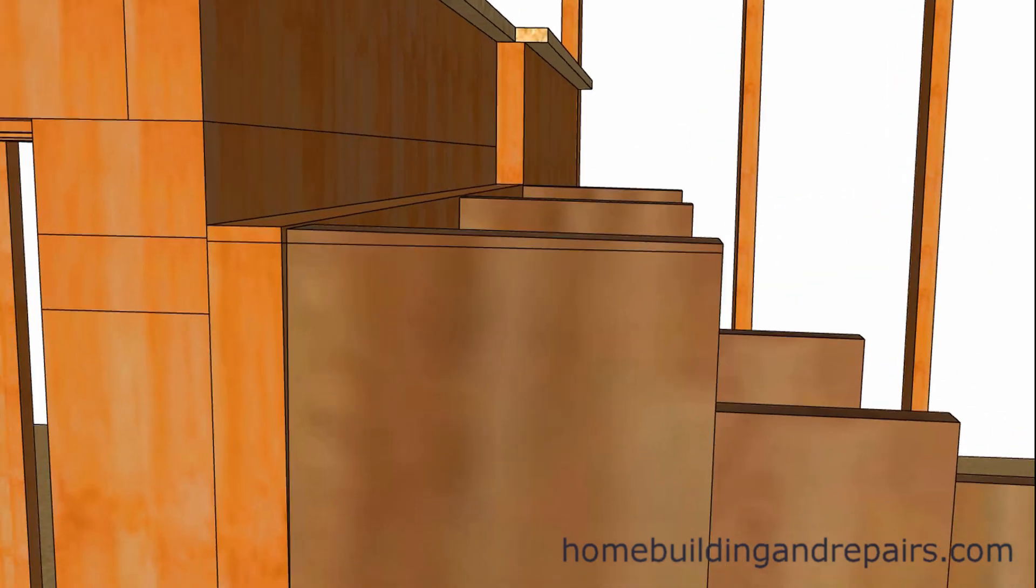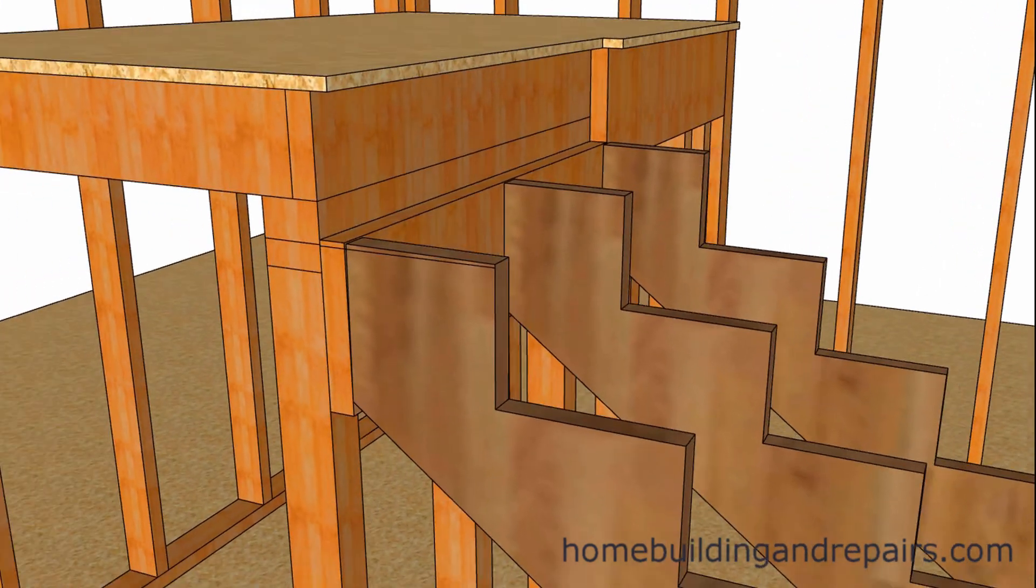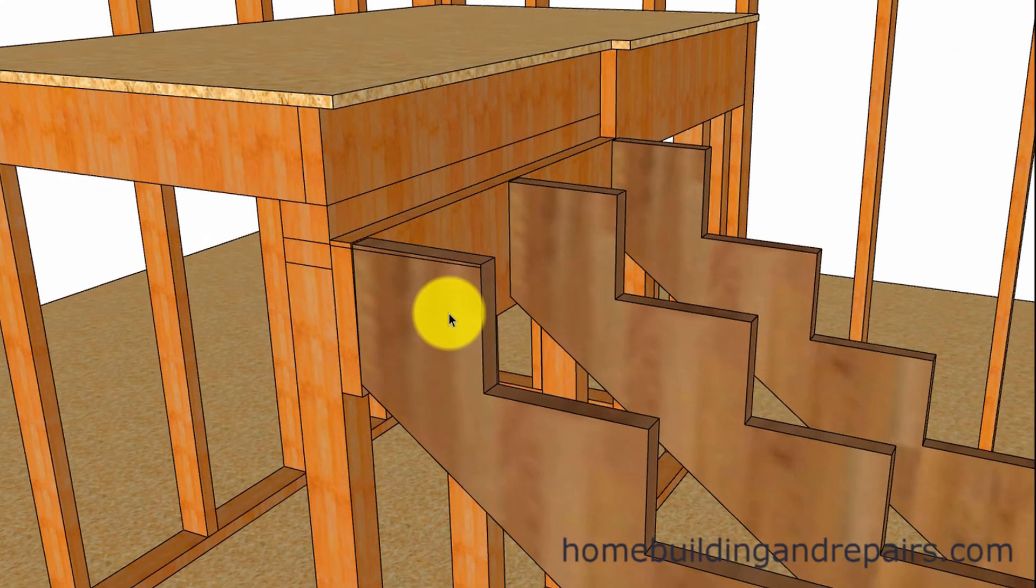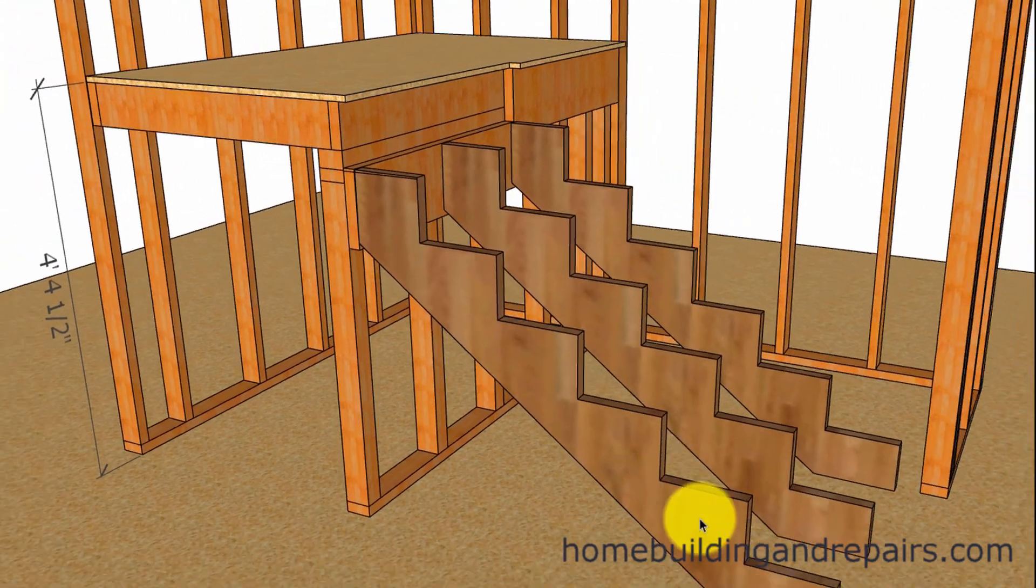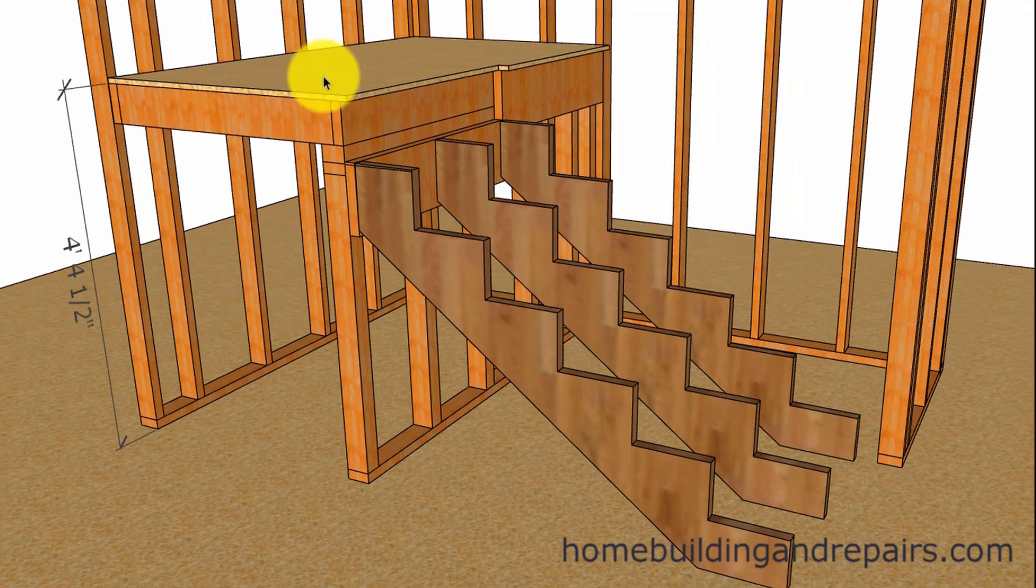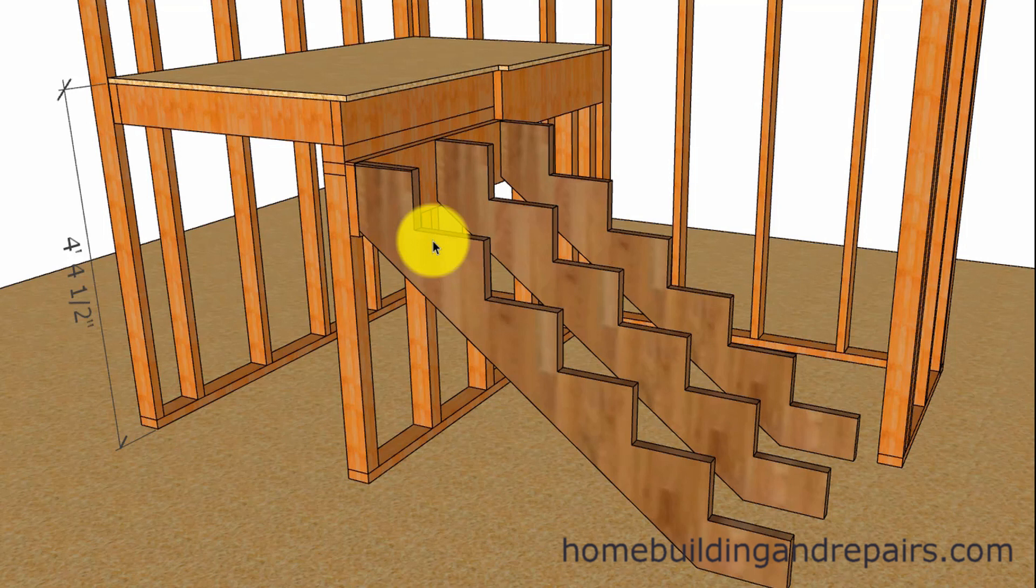Now this problem will get even worse if you have smaller stairways. So for example, if you have a stairway that's only going to go up three steps and you make this mistake, your stair treads could be out half of an inch. If you have a set of stairs that's a total of 20 steps, you have 10 steps on the bottom, 10 steps on the top, you'll hardly even notice it.